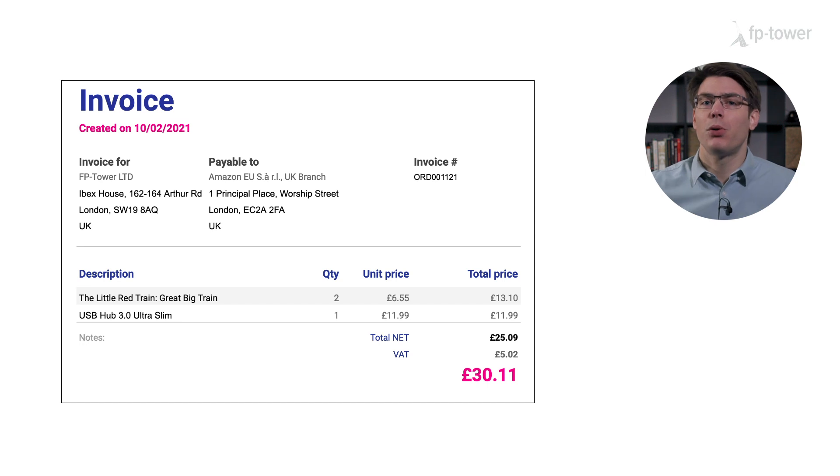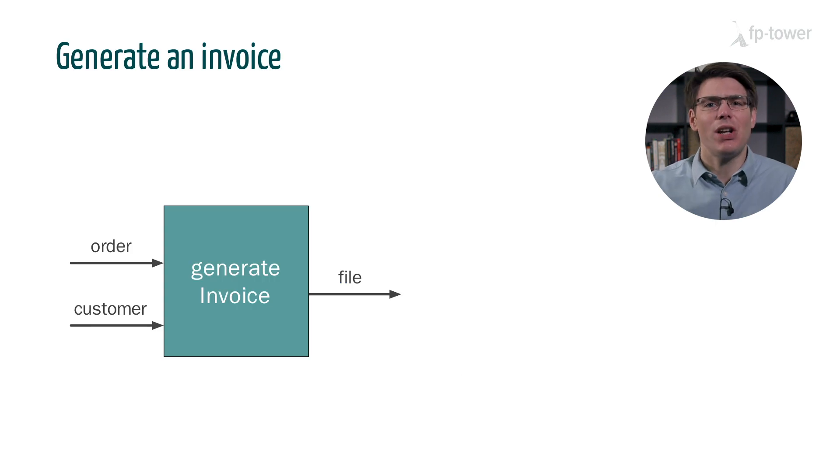We'll skip over producing the actual document and instead focus on the interface. Essentially we need to implement a function that accepts: one, an order which contains the relevant information about each product such as the price and the quantity; two, a customer's record containing their name and address. Then the function must output a file, perhaps a PDF, representing the invoice.